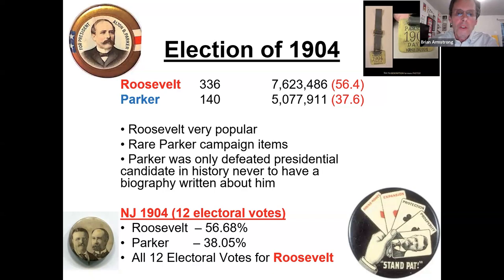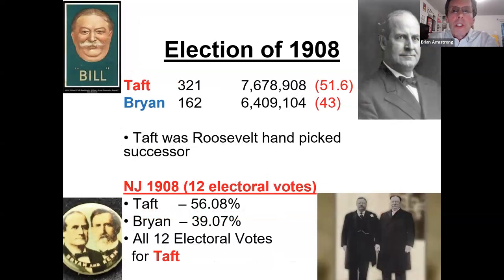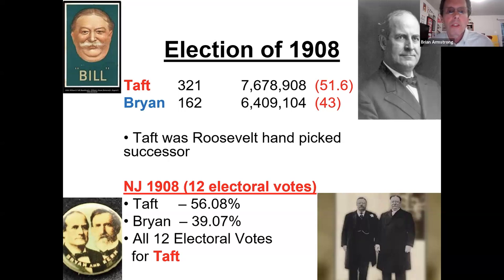New Jersey goes for Roosevelt with 56% — very strong support. In 1908, Roosevelt having vowed not to run for a third term, he selected William Howard Taft, his very close friend, who supposedly would follow the Roosevelt legacy.